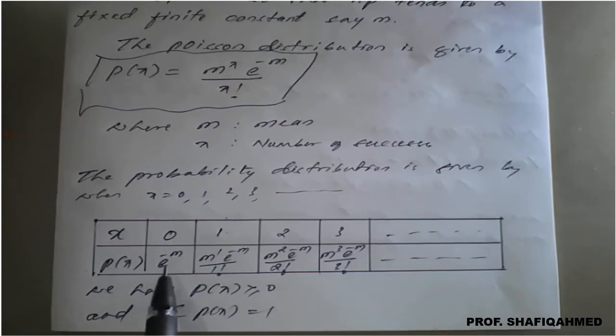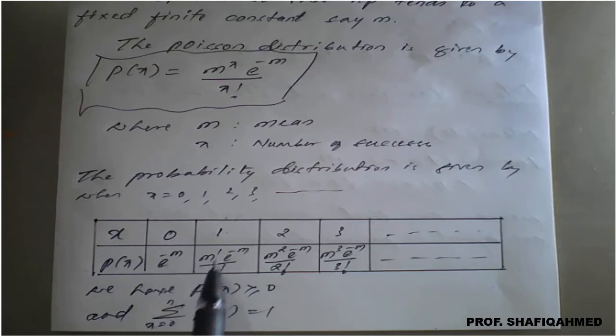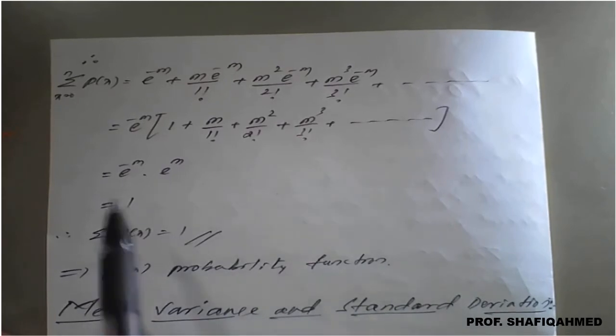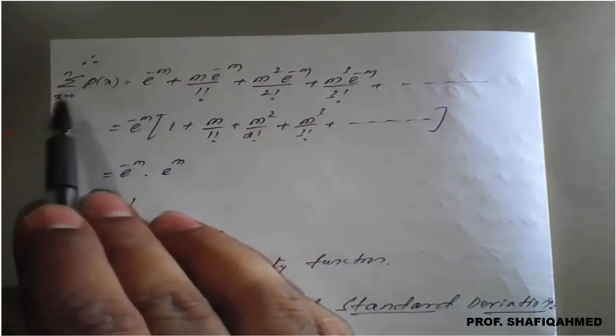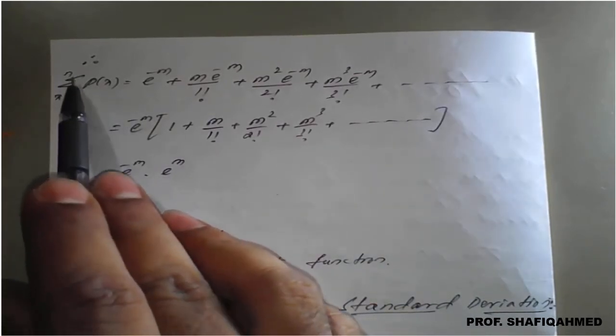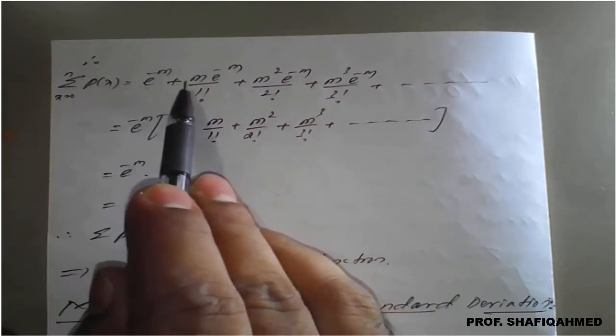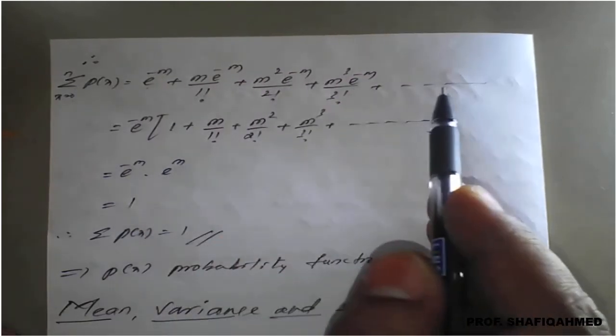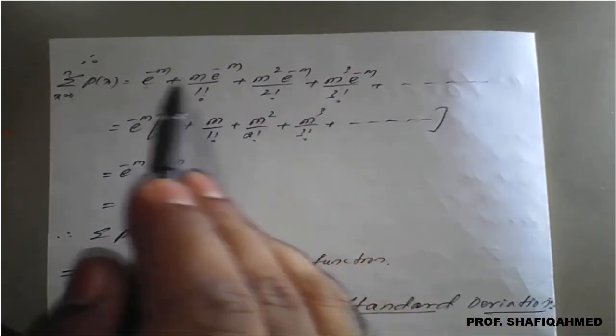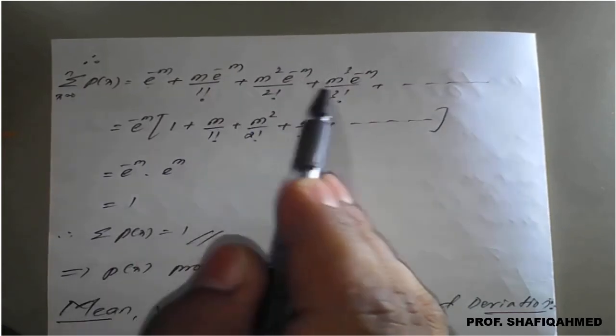For this, you just add e raised to minus m plus m raised to 1 times e raised to minus m divided by 1 factorial, and so on. Then we will get it as summation of P(x) from x from 0 to n: e raised to minus m - the first term of the distribution plus second term plus third term and so on like that. You can see that e raised to minus m is common in each term.